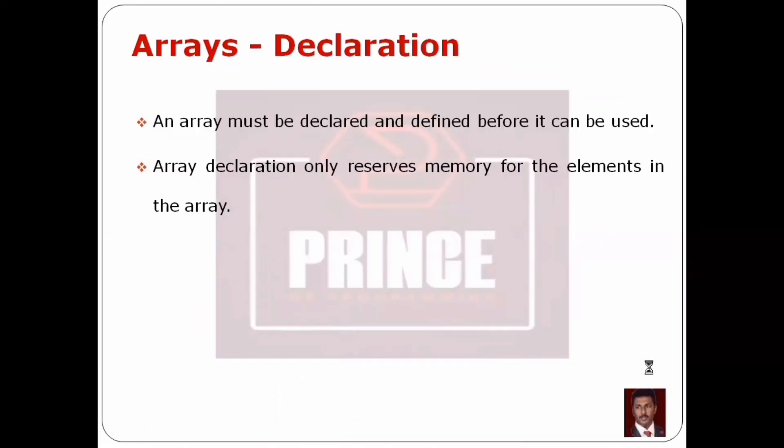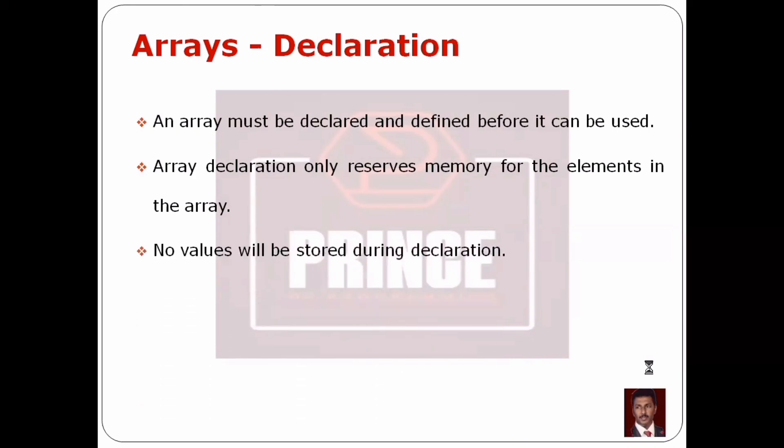Array declaration only reserves memory for the elements in the array. There is a set of elements, and if we are going to store them in memory locations, we reserve space. No values will be stored during declaration — values are stored when we initialize the array.